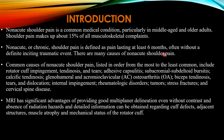There are many causes of non-acute shoulder pain, listed from most to least common: rotator cuff impingement, tendinosis and tears, adhesive capsulitis, subacromial and subdeltoid bursitis, specific tendinosis, glenohumeral and acromioclavicular osteoarthritis, biceps tendinosis and tears, dislocation, internal impingement, rheumatological disorders, tumor, stress fracture, and cervical spine disease.